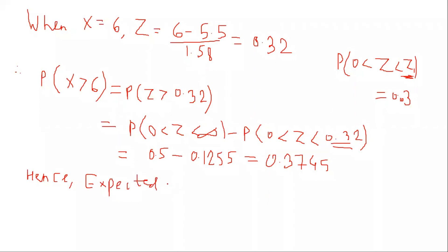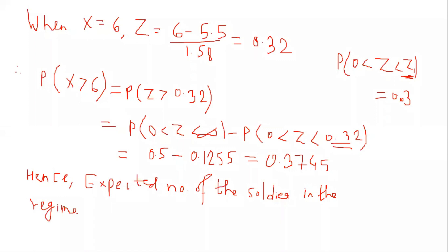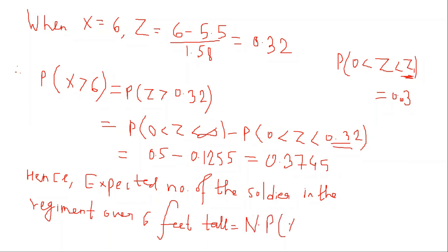The expected number of soldiers in the regiment over six feet tall is equal to 1000 multiplied by P(X greater than 6).